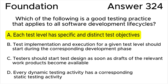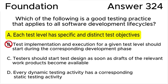Answer B is wrong because test analysis and design for a given test level should start during the corresponding development phase to facilitate early testing — for example, acceptance test analysis and design should begin during requirements analysis. Test implementation and execution will generally start later, with test execution starting during the test level itself.